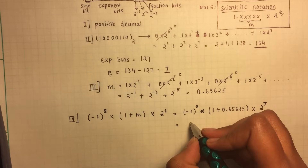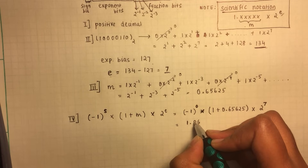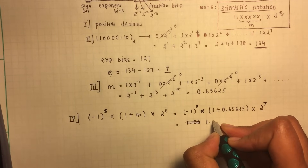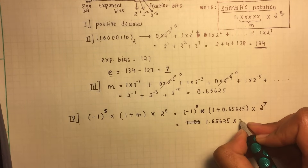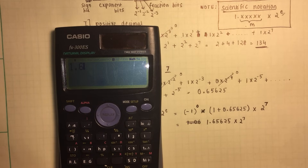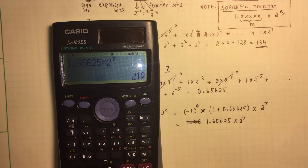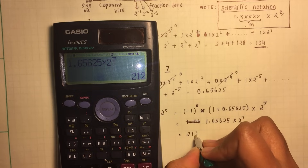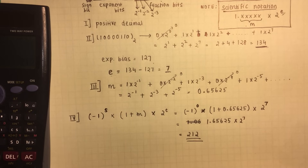So the final answer would be 1.65625 times 2 to the 7. You plug this in your calculator. You get 1.65625 times 2 to the 7. And you end up with the decimal equivalent of the floating point notation. And in this case, it's 212. I hope you understood how this works. Thanks for watching the video.